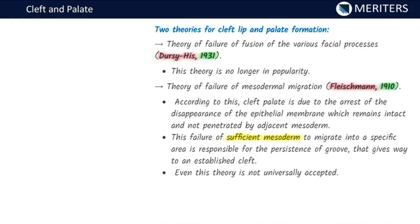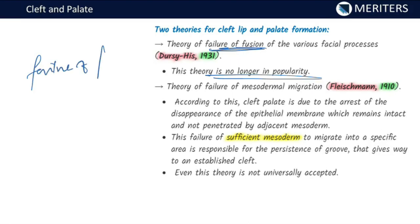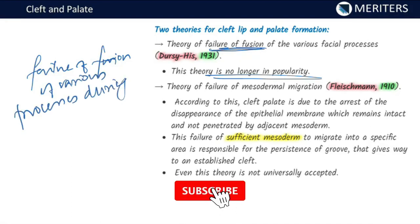There are two theories for cleft lip and palate. The first is the theory of failure of fusion, given by Darsey in 1931. Though no longer universally accepted, it is very frequently referenced. It attributes clefting to the failure of fusion of various facial processes during development.